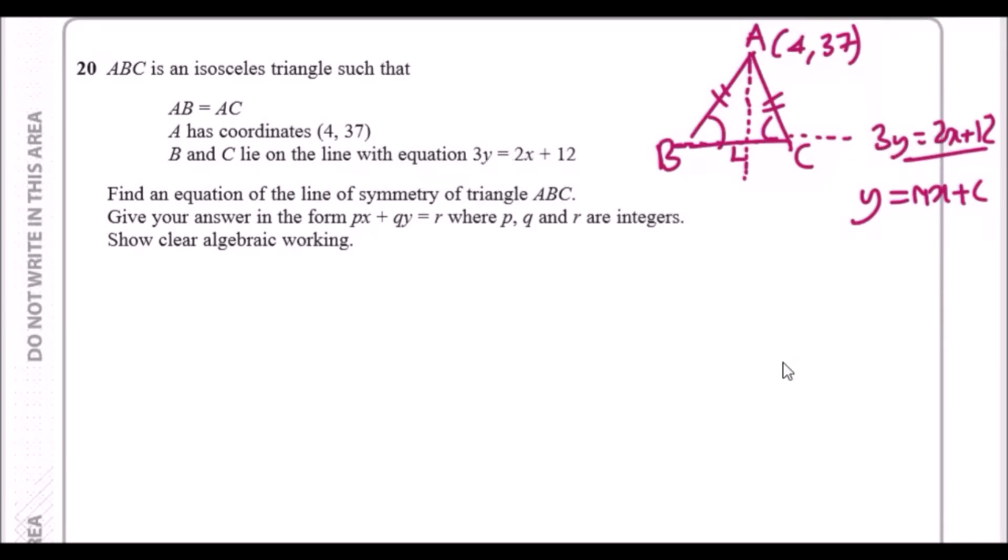We have y = 2/3 x + 4. This means the gradient of the line that cuts through BC is 2/3. But the perpendicular gradient of the line from A downwards is the negative reciprocal, so the line going downwards is y = -3/2 x + c, which we don't know yet. We're almost there – we just need to find c. Since we know that (4, 37) is on this line, we just plug in x = 4 and y = 37.